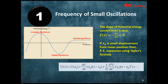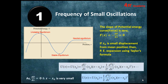Since dU/dx = 0 at the equilibrium position, that term vanishes. Because x₀ is a very small displacement, we can neglect all higher-order terms. The remaining potential energy is: U(x) = U(x₀) + (1/2)(d²U/dx²) · (x − x₀)².